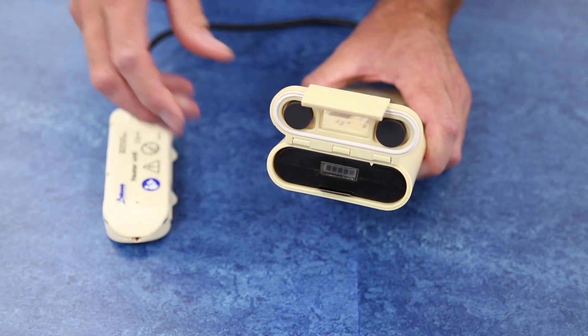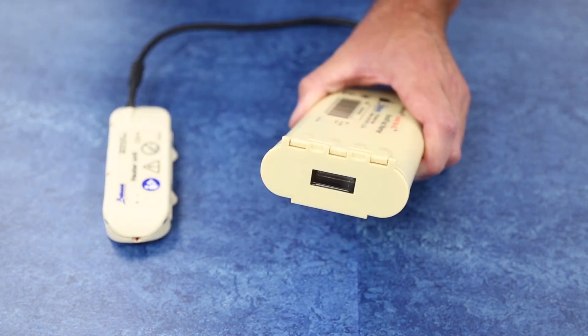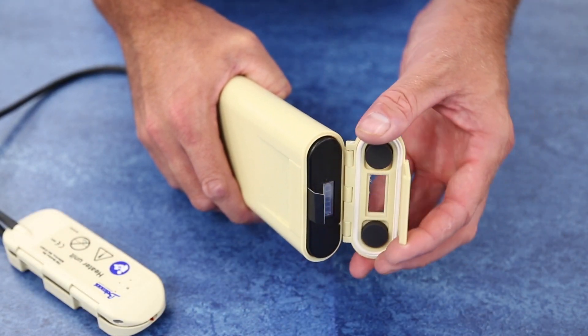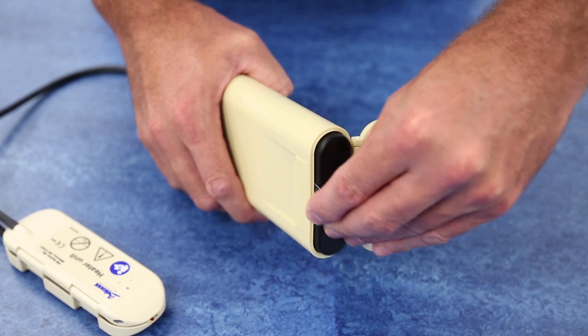Once the battery is seated, close and latch the door. If the door will not close or latch, be sure that the battery is fully seated in the correct position.